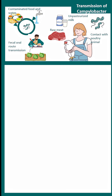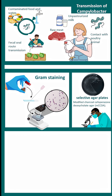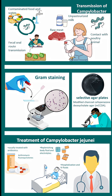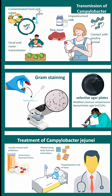There could be other modes of transmission like raw meat and unpasteurized milk. Gram staining can give us a preliminary idea about detection, and selective agar plating, specifically modified charcoal agar, can help with identification. Since it's a bacterium, antibiotics are key — azithromycin and fluoroquinolones can be used for treatment.